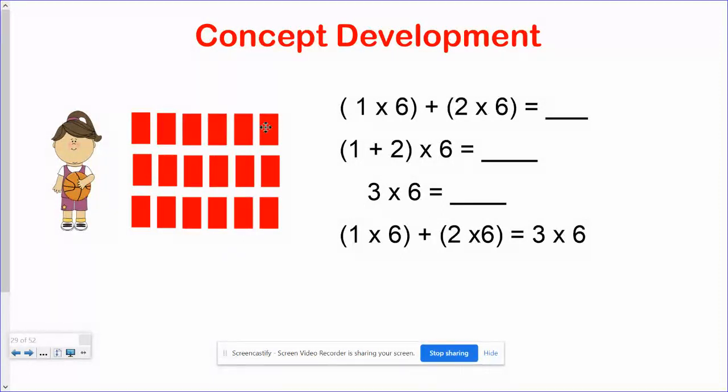It's the same thing as eighteen. So, we're also saying that it could be also three times six, which is eighteen. One times six is six, plus two times six is twelve, which equals eighteen, are three groups of six.